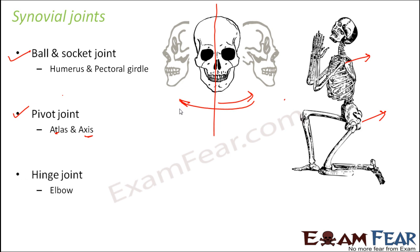The third type of synovial joint is the hinge joint, which is present in the elbow. If you look at the movement of the elbow, it is a little different from that of the shoulder — at the shoulder you can rotate it completely, but at the elbow you can just move it back and forth. That is an example of a hinge joint.